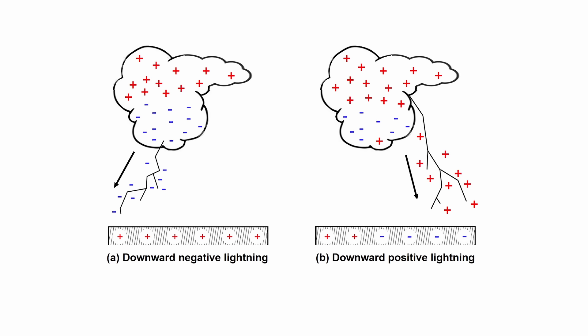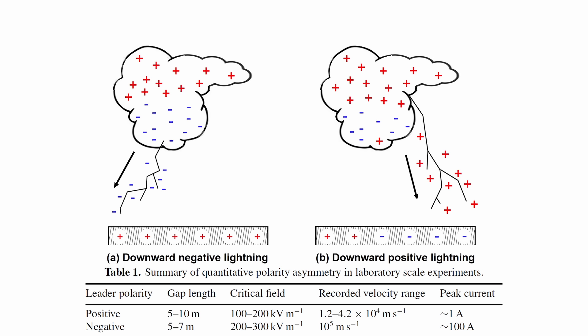The intriguing asymmetry might find its root in the fact that the negative leader is not only hotter, but also more electrically conductive when compared to its positive counterpart. Furthermore, the considerable speed at which the negative leader advances surpasses that of the positive leader, contributing to a more rapid closure of the gap.